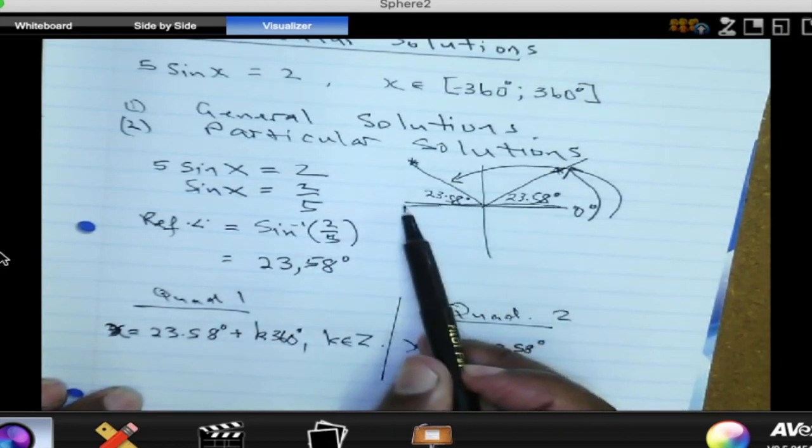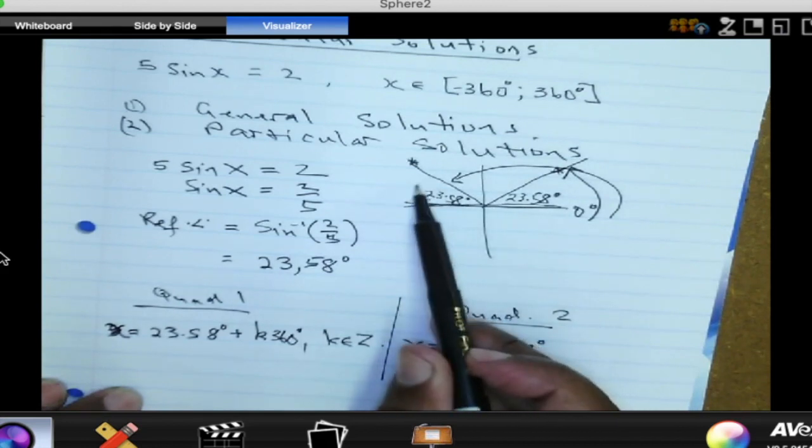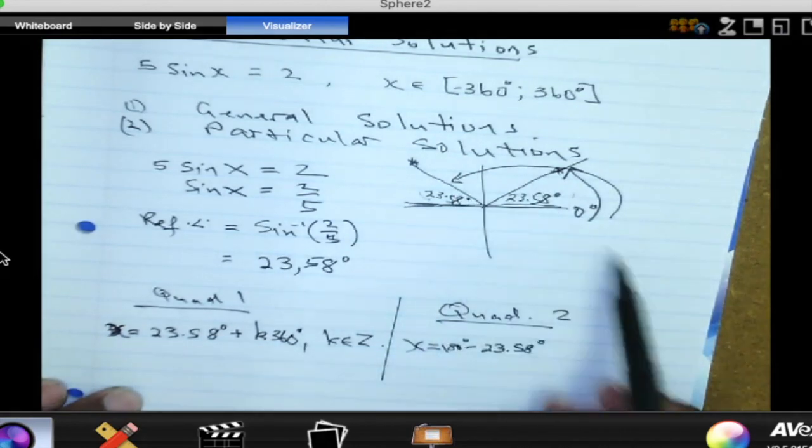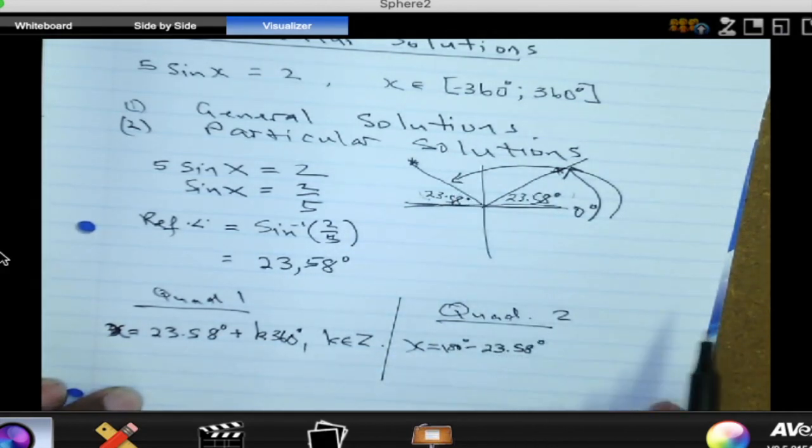So it's 180 subtract 23.58. Remember this is a straight line, and this angle there is 23.58, so the remaining angle there should be 180 subtract 23.58. But that is not going to be the only angle; we can add as many 360s as well. So plus K times 360 where K is an integer. Someone please simplify that for us. What is 180 subtract 23.58? 156.42.